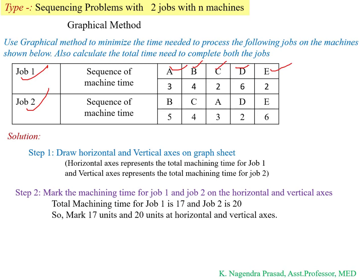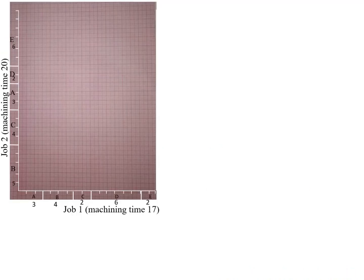Step 2 is to mark the machining time for Job 1 and Job 2 on the horizontal and vertical axes. The machining time is 17 units for Job 1 and 20 units for Job 2. So we mark 17 units on the horizontal axis and 20 units on the vertical axis. With Steps 1 and 2 complete, we move to Step 3.